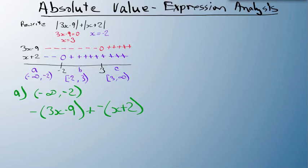Multiplying the signs out, we get minus 3x plus 9, plus times negative gives us negative x minus 2. Collecting like terms, I get minus 4x plus 7. So on the interval from negative infinity to minus 2, the equation is minus 4x plus 7.